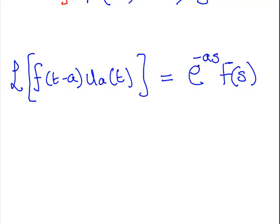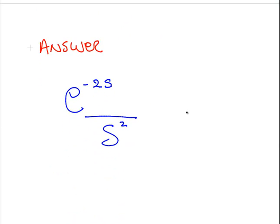f of t, so this is e to the minus a times F of s. Here, we know that a, we just said a second ago, was 2. So e to the minus 2s times F of s, that's 1 over s squared. So the answer is e to the minus 2s over s squared.